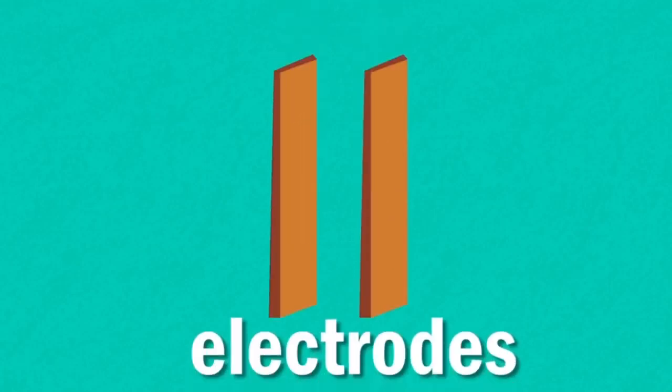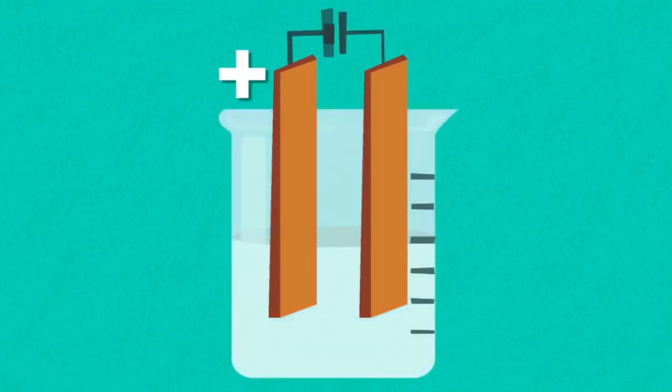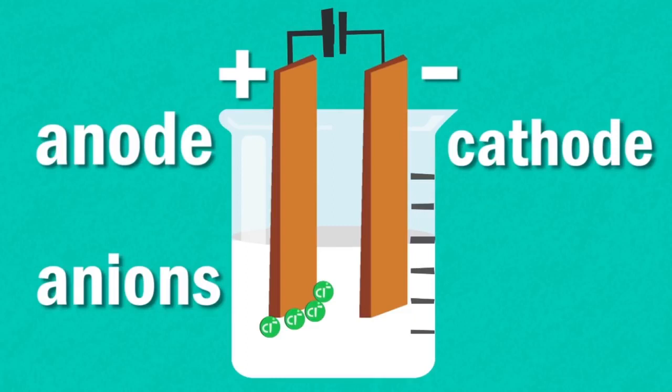There are special names for the electrodes, which are usually metal plates with a larger surface area than a piece of wire. The positive electrode is called the anode, it attracts anions, and the negative electrode is called the cathode, it attracts cations.